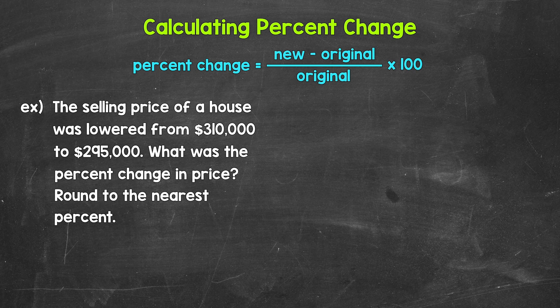Let's jump into our example where we have the selling price of a house was lowered from $310,000 to $295,000. What was the percent change in price? Round to the nearest percent. So let's set this up.